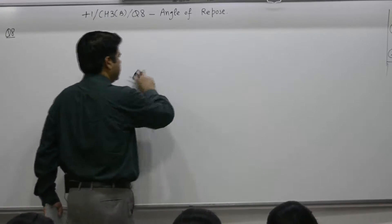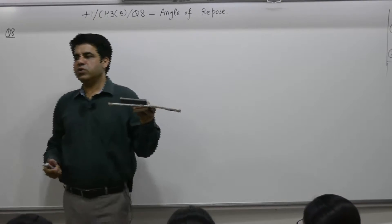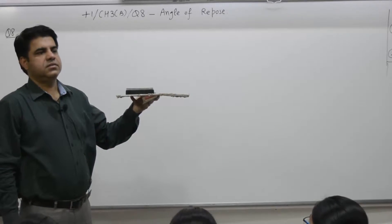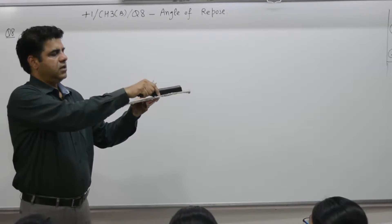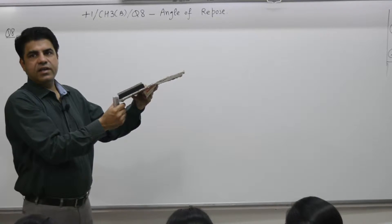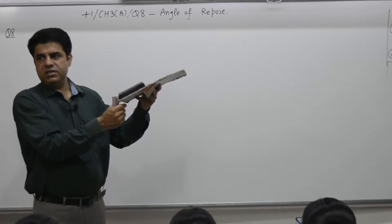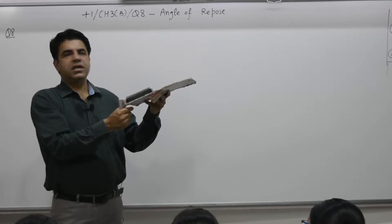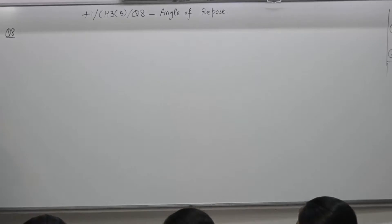Angle of repose — a simple experiment. You have to design a slide in a park. If it is perfectly horizontal, do you call this a slide? If you keep on changing the angle — 5, 10, 15, 20, 25, 30 degrees — the object just starts sliding at some angle, say 30 degrees. The angle at which it just starts sliding is termed the angle of repose.